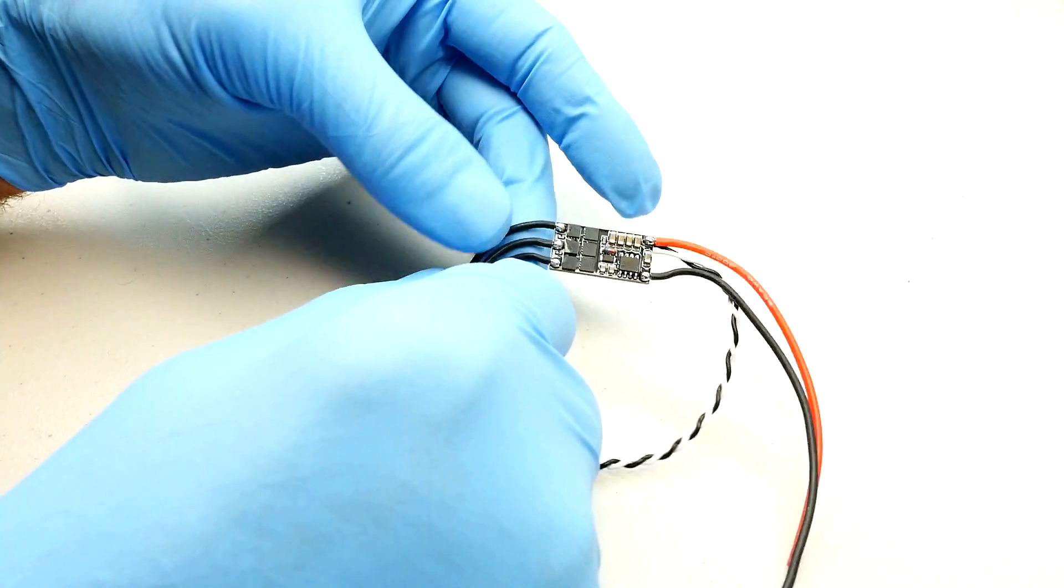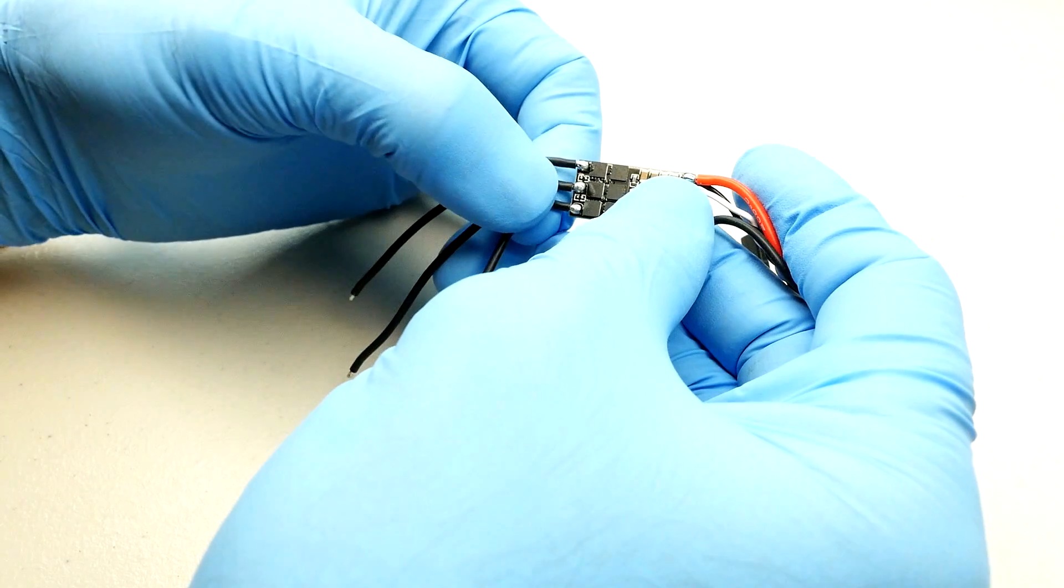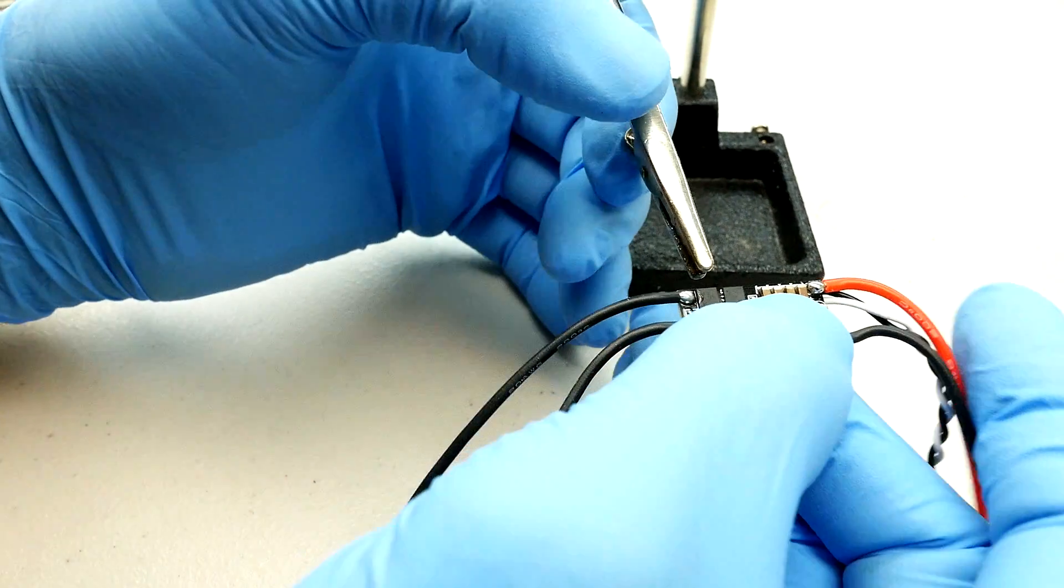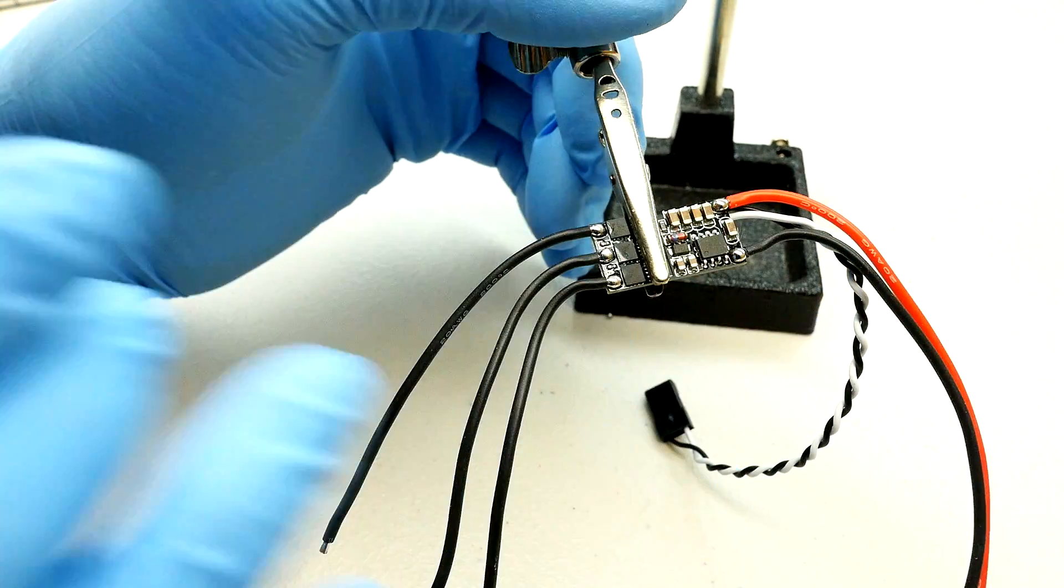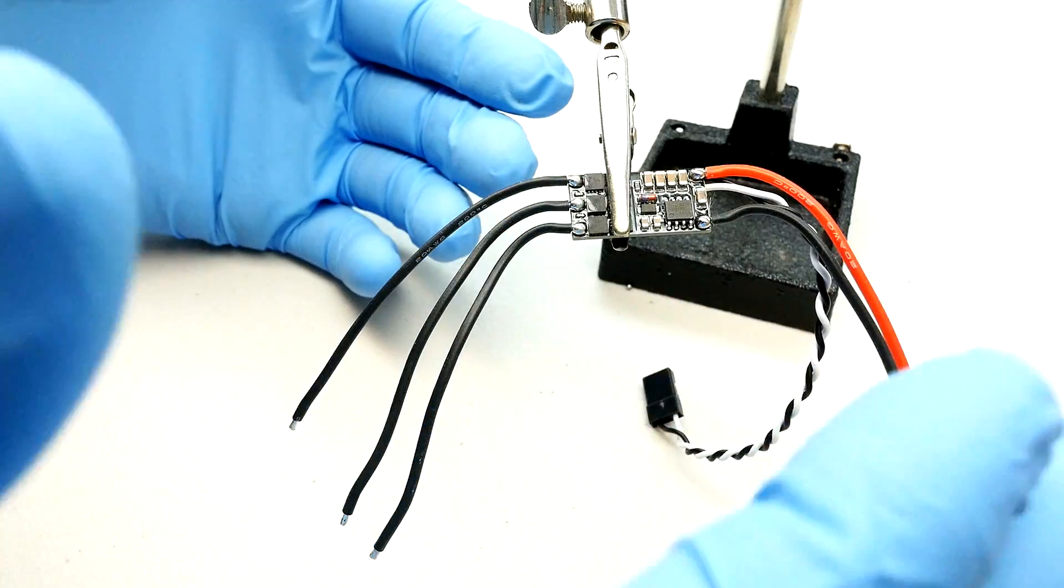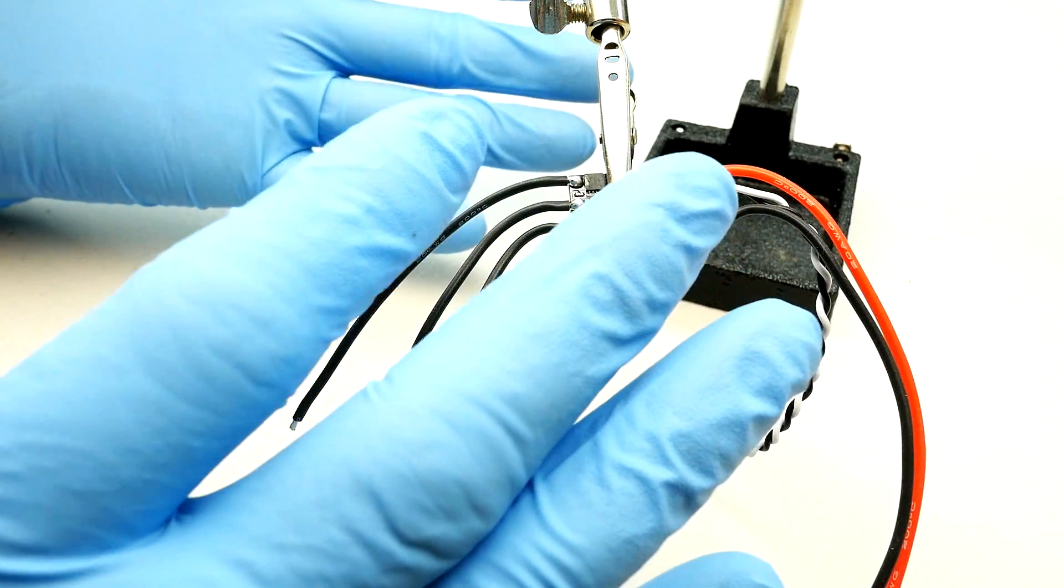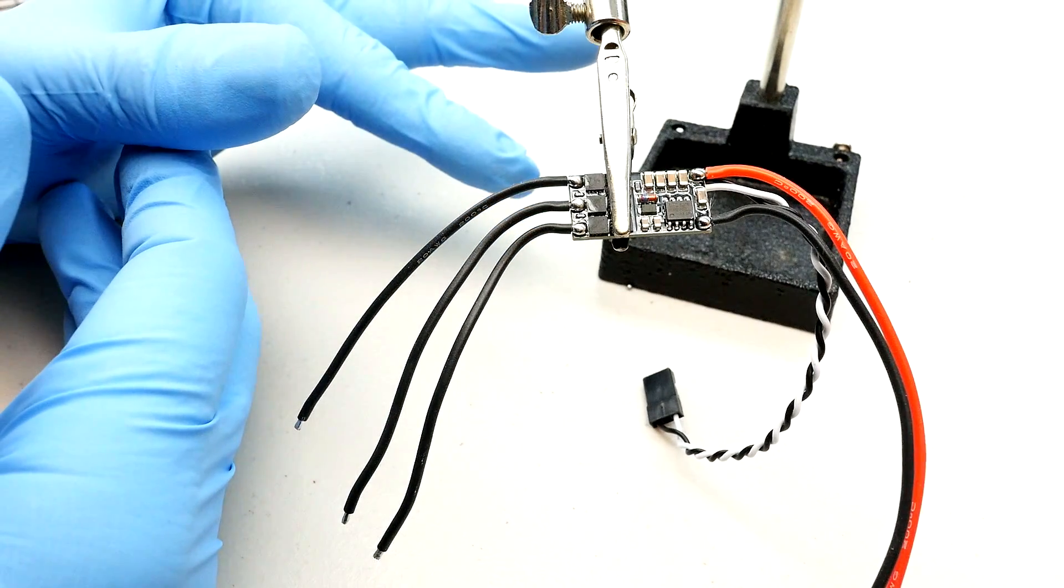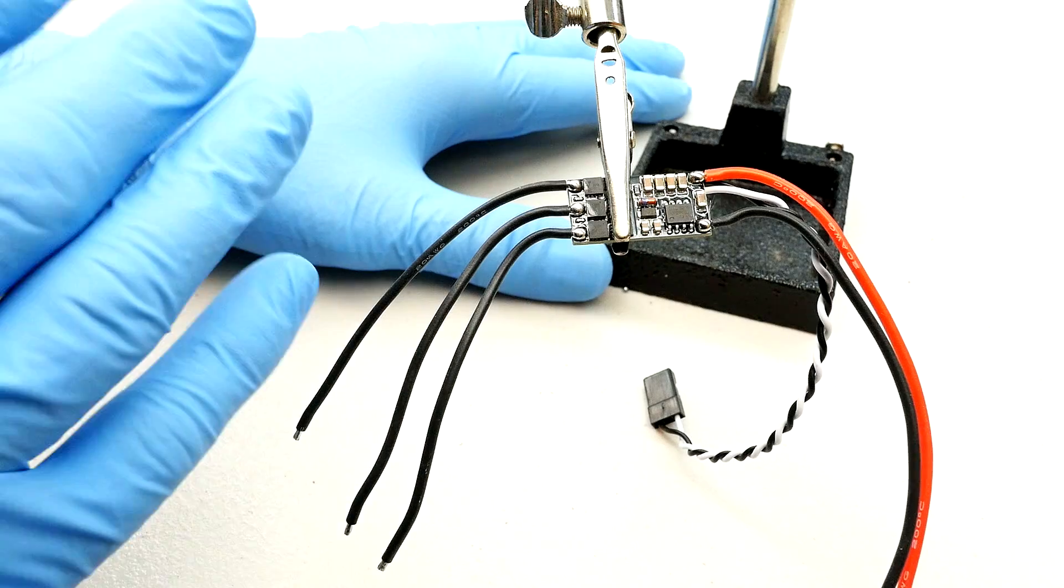Alright, now what you want to do is desolder these motor leads from the board. It's really easy to do. I like to use one of these little alligator clamps, whatever you want to call it, soldering helper. It's like a second person sitting here holding it for you. And one thing I want to point out is you don't have to use blue gloves on your hands. I've got a rare genetic disorder on my hands and I didn't want to put you guys through that and have to look at that. I'm just kidding, I don't have a rare genetic disorder. But you don't have to use blue gloves.